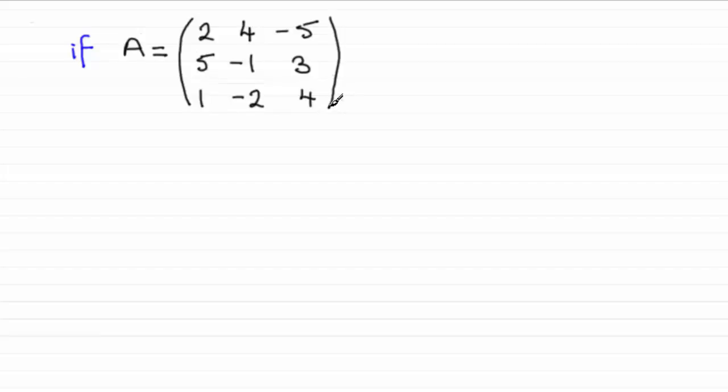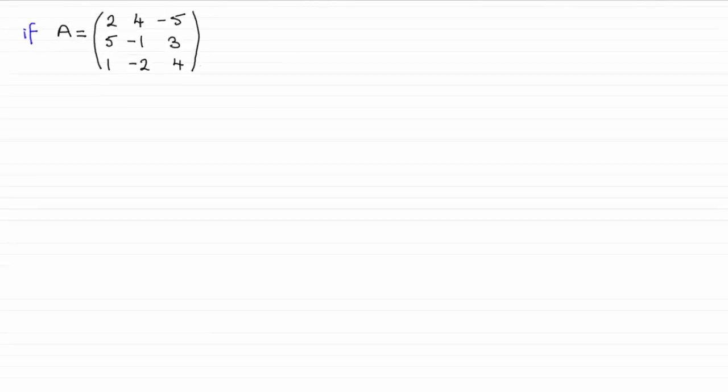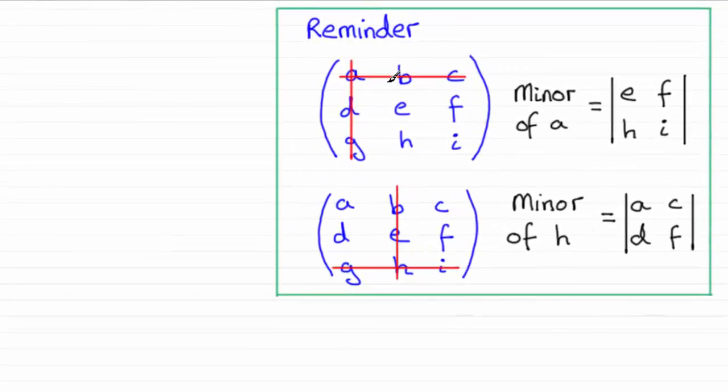So let's start by just recapping in case you didn't see that last video what we meant by a minor of an element in a 3x3 matrix. So we saw that if we had an element A and we imagined crossing off the row through A and the column through A, it left us with four elements. The minor of A was defined as the determinant of those four remaining elements.